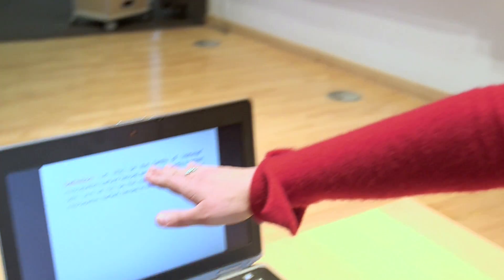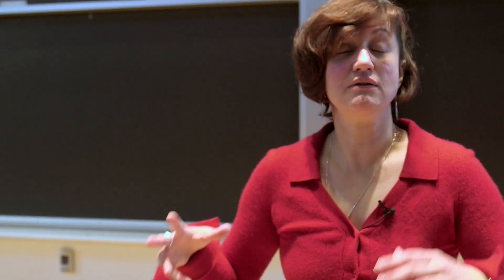So in this paper, they talk about M of K, so they give names to things. So this is the family of our minimal inescapable barbed fences with K A cells. So they need to fix that K in order to have a function. And let F of K be the actual number of such minimal inescapable barbed fences. Not the list, but the number of them.